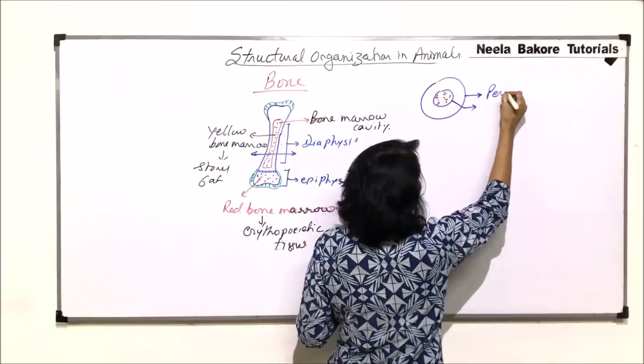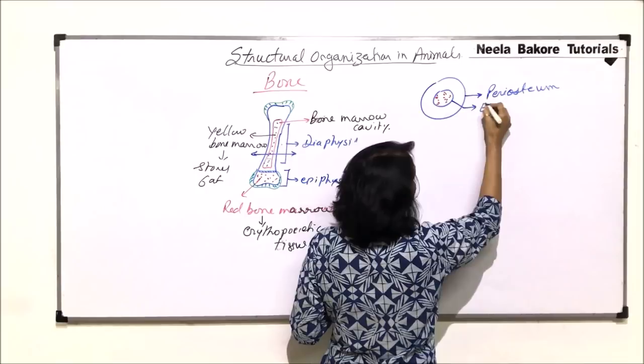The bone is covered by a fibrous sheath on the outer side and on the inner side also. The outer layer is known as periosteum and the inner one is known as endosteum.